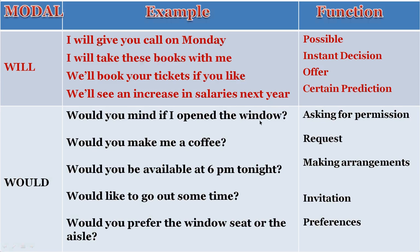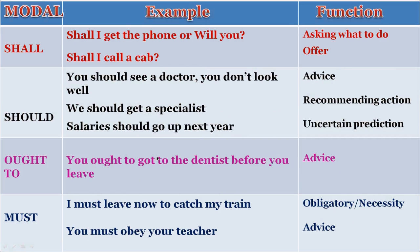Then would. 'Would you mind if I open the window?' — you're asking for permission. 'Would you make me a coffee?' or 'Would you take me outside?' — that's a request. 'Would you be available at 6 PM tonight?' — making arrangements. 'Would you like to go out sometime?' — that's an invitation. 'Would you prefer the window seat or the aisle seat?' — expressing preferences. That's how we use will and would for different functions.